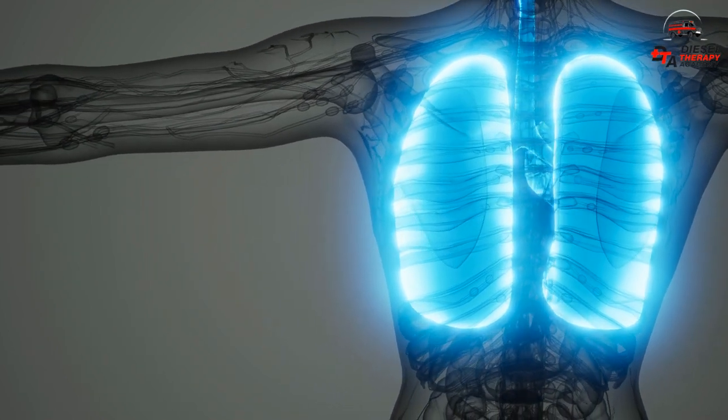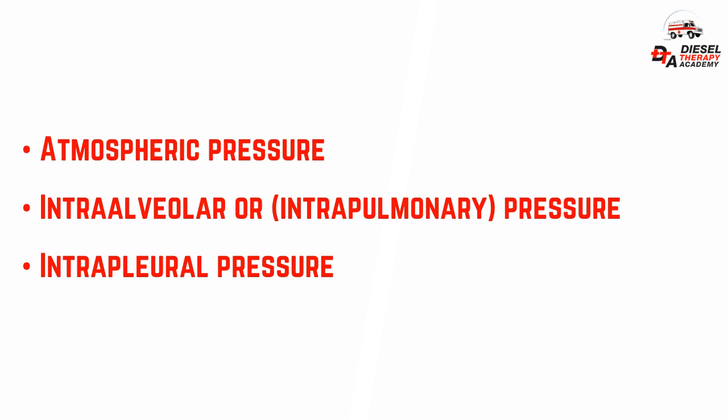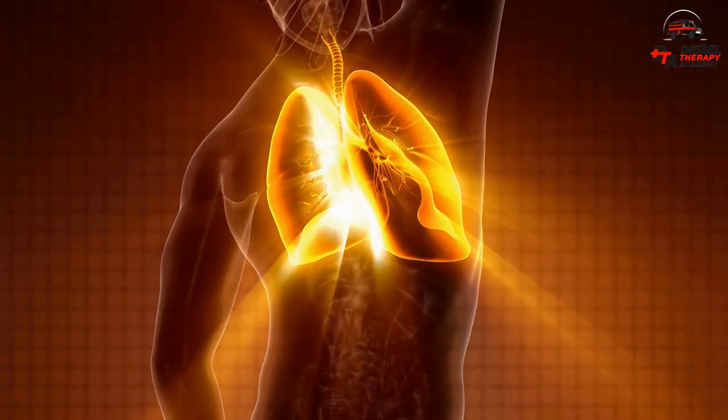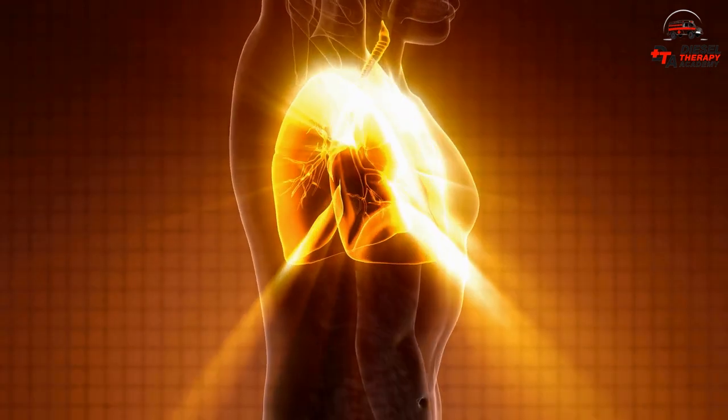Pulmonary ventilation involves three different pressures: atmospheric pressure, intralveolar or intrapulmonary pressure, and intrapleural pressure. Atmospheric pressure is the pressure of the air outside the body. Intralveolar pressure is the pressure inside the alveoli of the lungs. Intrapleural pressure is the pressure within the pleural cavity. These three pressures are responsible for pulmonary ventilation.